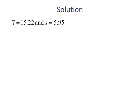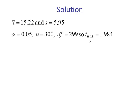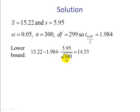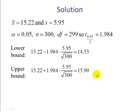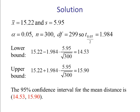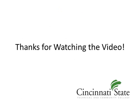x̄ given in the problem was 15.22 and s was 5.95. α is 0.05 because we're using a 95% confidence level. n is 300, therefore our degrees of freedom is 299. So our t α/2 is 1.984, and again this is coming from table 6. Our lower bound is our point estimate minus our margin of error, which is 14.53. Our upper bound is the point estimate plus our margin of error, which is 15.90. The 95% confidence interval for the mean distance is 14.53 to 15.90. Thanks for watching.